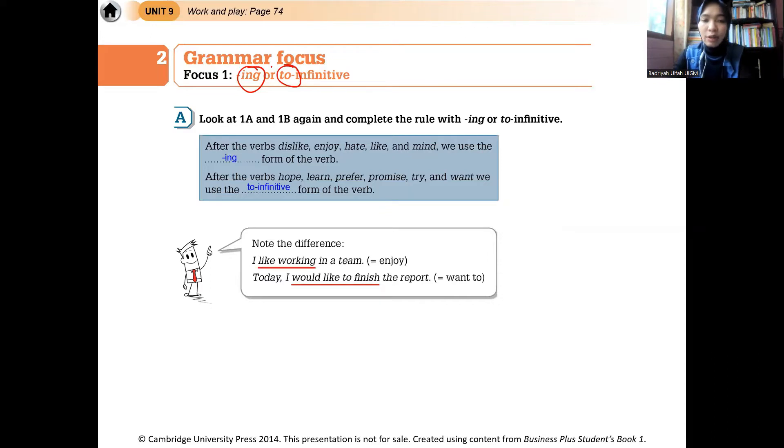Nah, di dalam bahasa Inggris, when you found two verbs in the same sentence, one of the verbs, especially the last verb, should be added with -ing or to infinitives. Jadi ketika dalam satu kalimat dalam bahasa Inggris terdapat dua kata kerja, maka kata kerja yang kedua itu harus kita tambahkan -ing atau ditambahkan to.